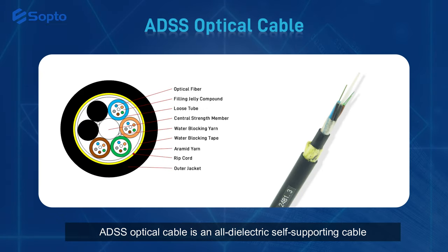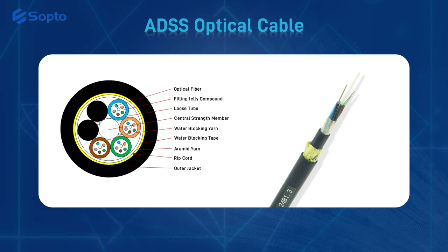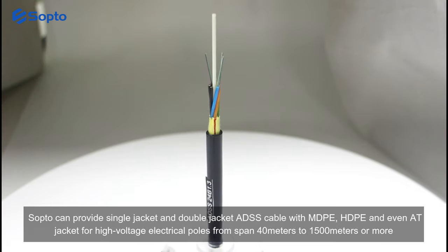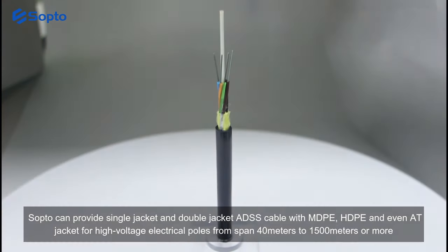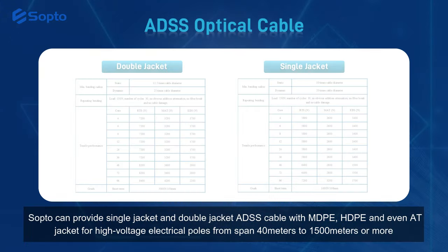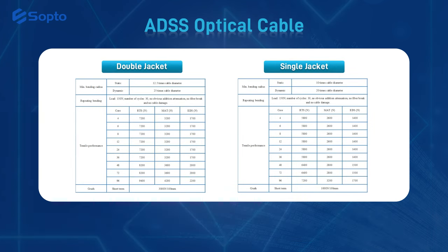ADSS optical cable is an all-dielectric self-supporting cable which can be installed on electrical poles. Sopto can provide single jacket and double jacket ADSS cable with MDP, HDP, and even a jacket for high voltage electrical poles, from span 40 meters to 1500 meters or more.